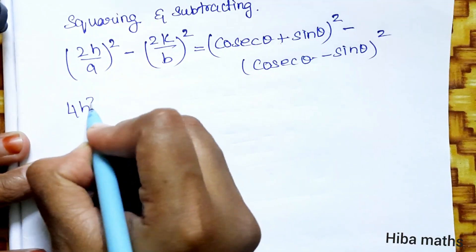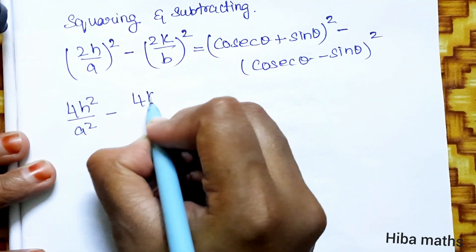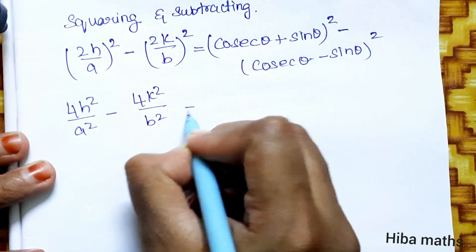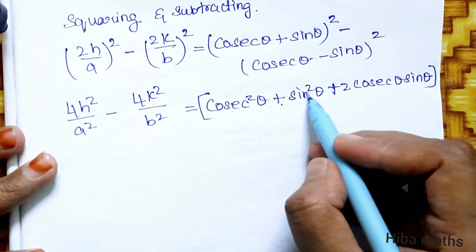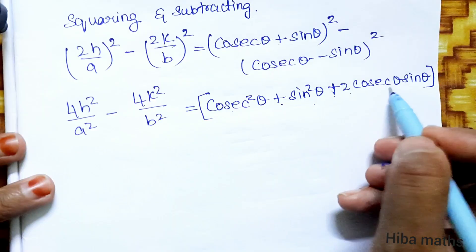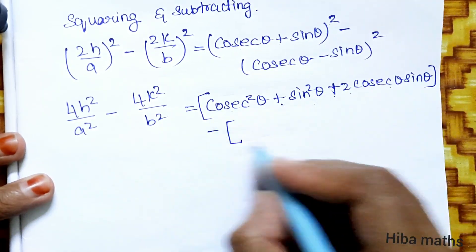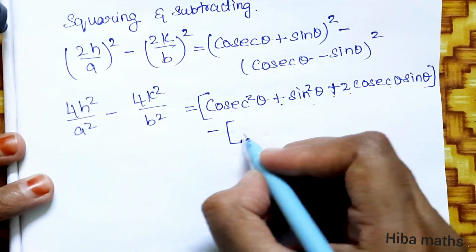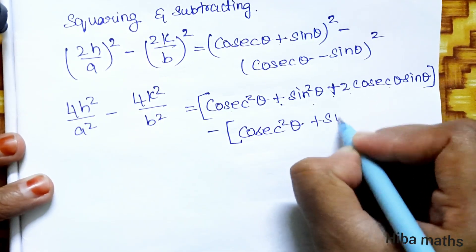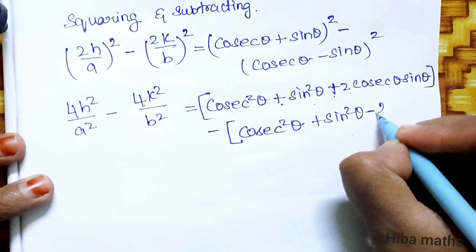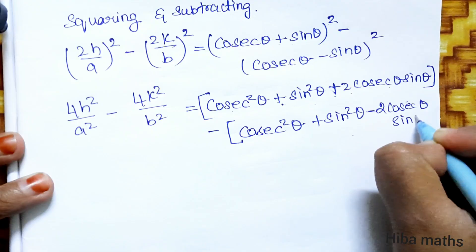So 4h²/a² - 4k²/b² equals (cosθ + sinθ)² - (cosθ - sinθ)². Expanding: (cos²θ + sin²θ + 2cosθsinθ) minus (cos²θ + sin²θ - 2cosθsinθ). The cos²θ and sin²θ terms cancel on both sides.